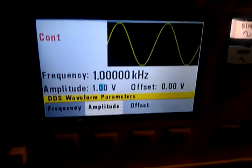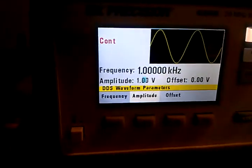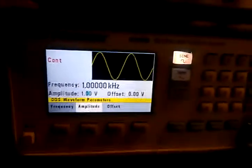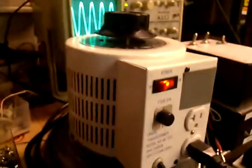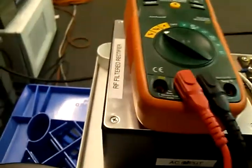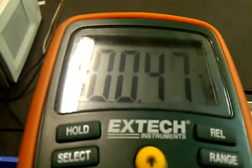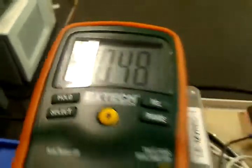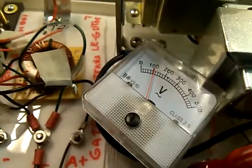This is a BK 4040B function generator. We've got the variac powering up an isolation transformer, which is powering up an RF filtered rectifier. This is 0.47 milliamps, and the B plus is running about 100 volts DC.